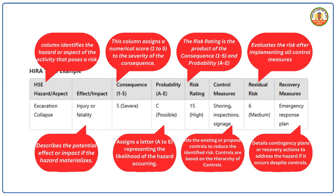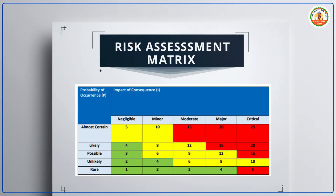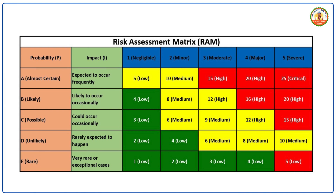What is a Risk Assessment Matrix and how do you use it? The Risk Assessment Matrix is a tool that helps determine risk levels by combining the probability of an event and the severity of its impact. The matrix is a grid where the rows represent probability, ranging from rare (1) to almost certain (5), and the columns represent impact, ranging from negligible to severe.